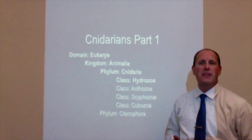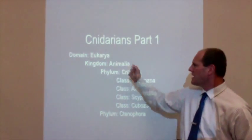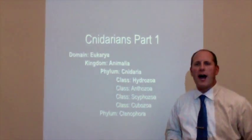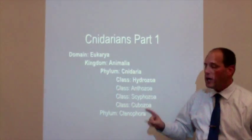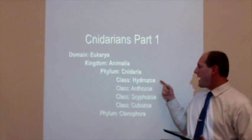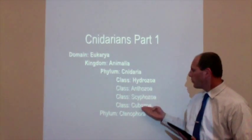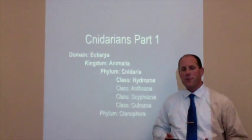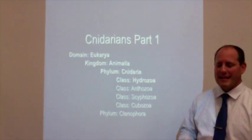Here is the full classification we'll be looking at. Our domain is Eukarya, kingdom Animalia, phylum Cnidaria — C-N-I-D-A-R-I-A — with that C being silent. There are actually four different classes. In this set of notes we'll cover the characteristics of the phylum and then the class Hydrozoa. We'll take a look at the other classes in our next set of notes. Please write down domain Eukarya, kingdom Animalia, phylum Cnidaria, and class Hydrozoa.